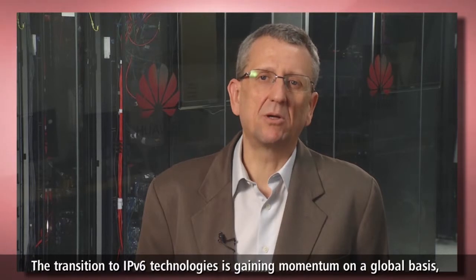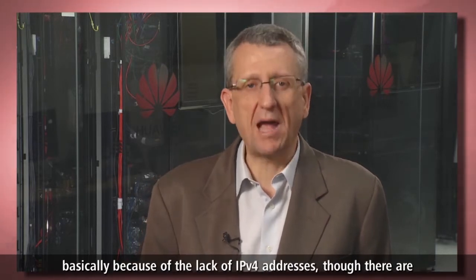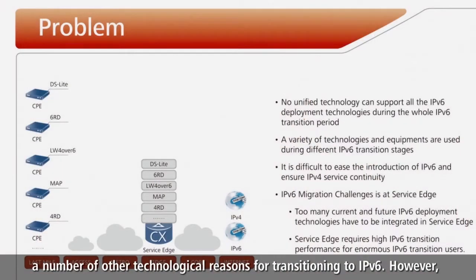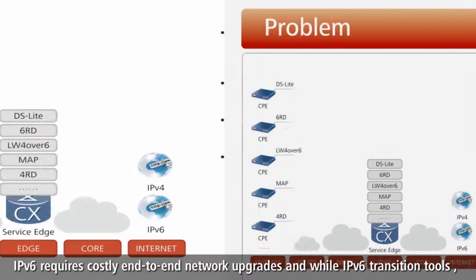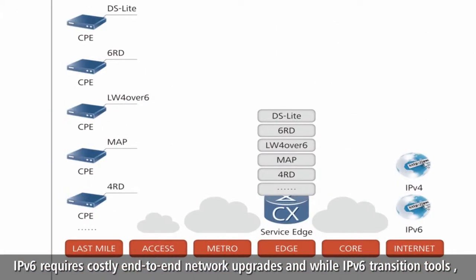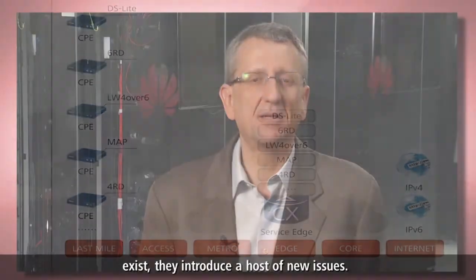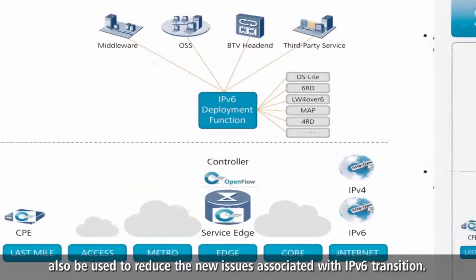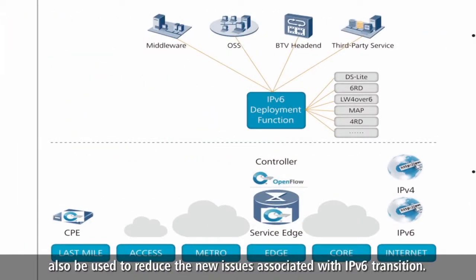The transition to IPv6 technologies is gaining momentum on a global basis, basically because of the lack of IPv4 addresses, though there are a number of other technological reasons for transitioning to IPv6. However, IPv6 requires costly end-to-end network upgrades and while IPv6 transition tools exist, they introduce a host of new issues. SDN provides a programmable platform for service deployment which can also be used to reduce the new issues associated with IPv6 transition.